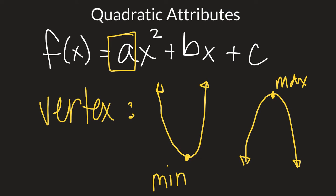You find the vertex by applying a formula. The X coordinate is found by taking negative B — the opposite sign of the number in front of X — divided by 2A. So if B is positive, that becomes subtraction; if B is negative, you get a positive because negative of a negative is positive. Then divide by two times the leading coefficient in front of your X squared.